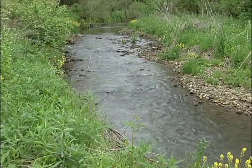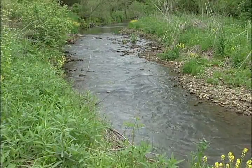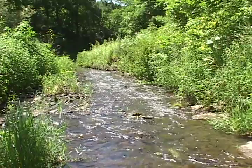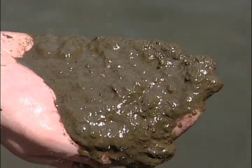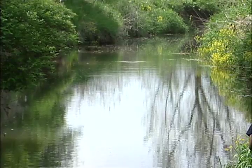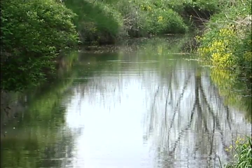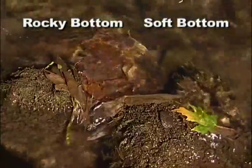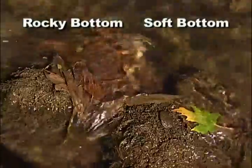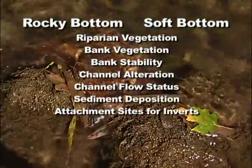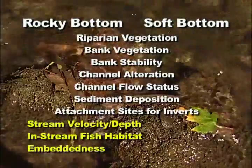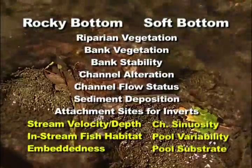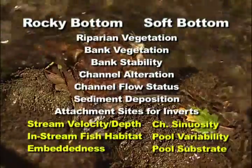Use the rocky bottom form if your stream generally has a rocky bottom — usually these streams have an abundance of riffle habitat or fast water areas. Use the soft bottom form if your stream generally has a mucky or sandy bottom; usually these streams are in low gradient areas with few to no riffle habitat or fast water areas. The two habitat assessment forms are nearly the same except for 3 to 4 parameters. I will first work through each of the 10 questions for rocky bottom streams and then finish with the 3 to 4 questions that differ on the soft bottom.